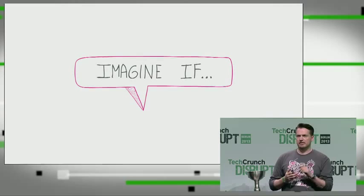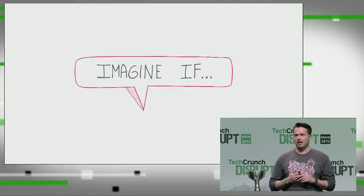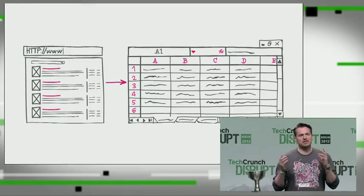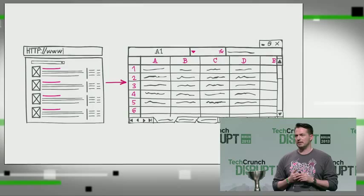But imagine if you could turn any website into a table of data or an API in a matter of minutes without writing code. For the first time ever, data on the web would be easily accessible to everyone, representing a significant step forward in information accessibility.